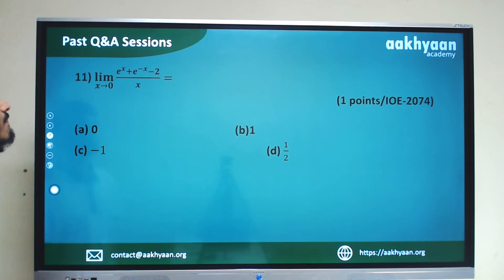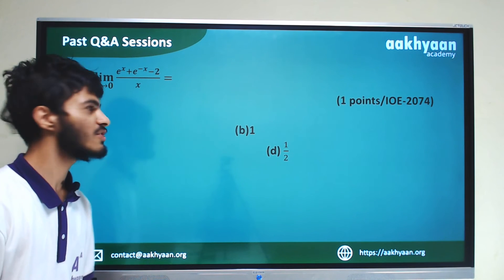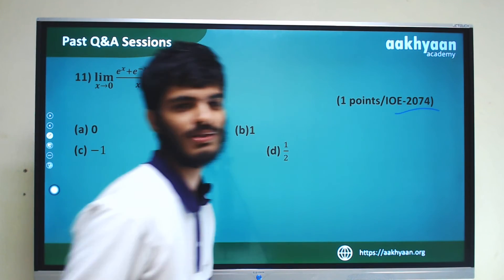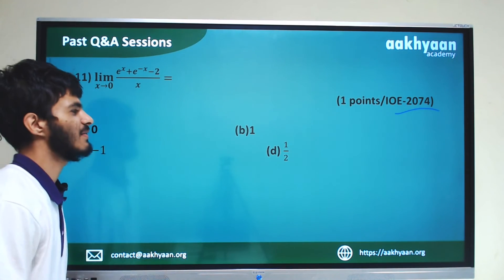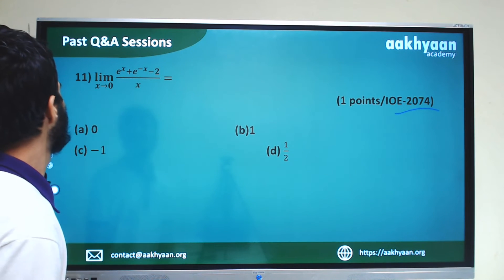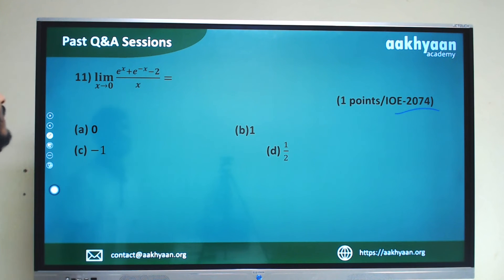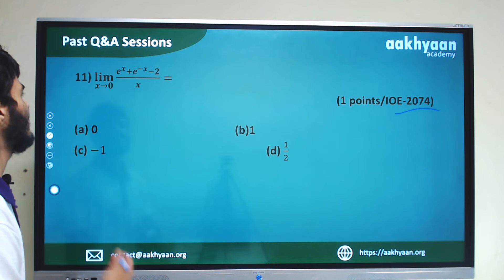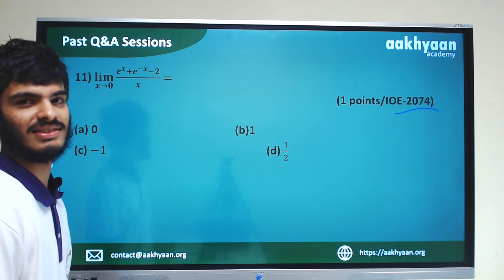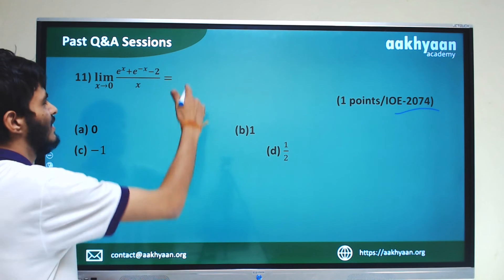In the next problem: limit x tends to 0 of (e^x plus e^(-x) minus 2) by x. This is from 2074. Putting x equal to 0 gives 0 by 0 form. We note this is related to the formula for the difference involving exponential terms.